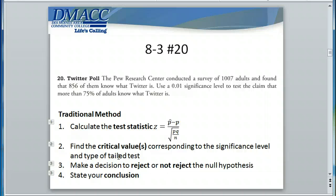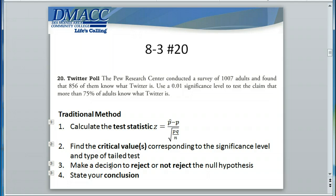The traditional method involves first calculating the test statistic, then finding the critical values corresponding to the significance level and type of tailed test. For a one-tailed test, either left or right, you only need to find one critical value. For a two-tailed test, there are actually two critical values, but because of symmetry of the distribution, they are the positive and negative of the same value. After finding the critical values and test statistic, you make a decision to reject or not reject the null hypothesis, then state your final conclusion.